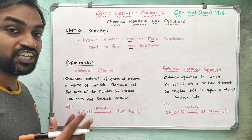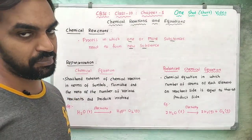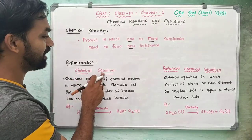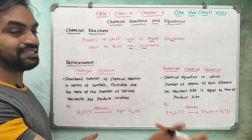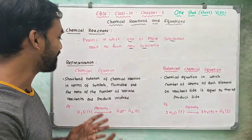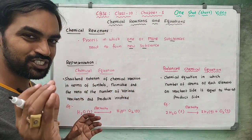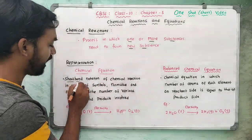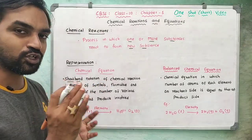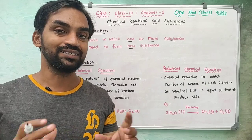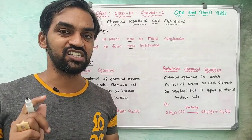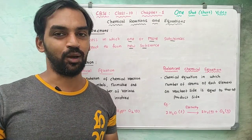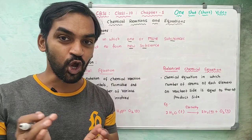How do we represent this chemical reaction? The representation is a chemical equation — a balanced chemical equation. For example, carbon dioxide is CO2, and water is H2O — so we use shorthand notation.